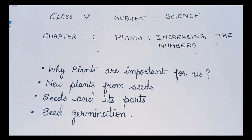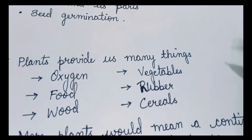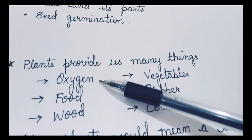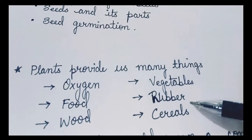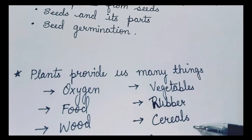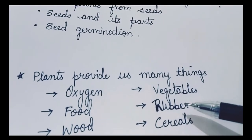Why plants are so important for us? Yes, because they provide us many things. They provide us oxygen which is very essential for us. They provide us food, wood, vegetables, rubber, cereals, and many more things. So if we need all these things, we need to plant more trees.